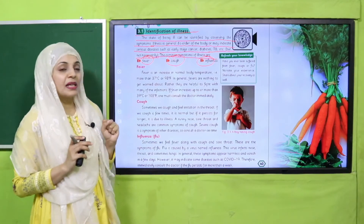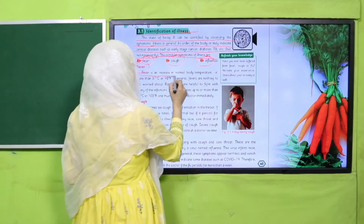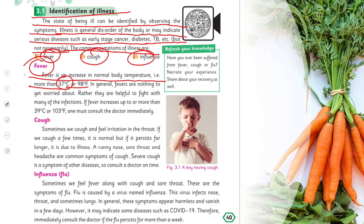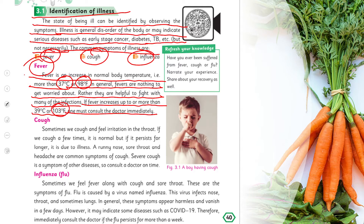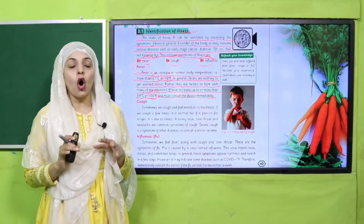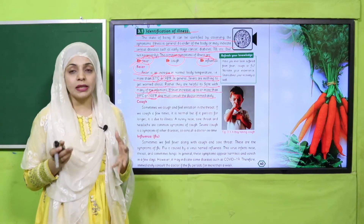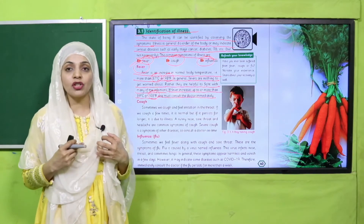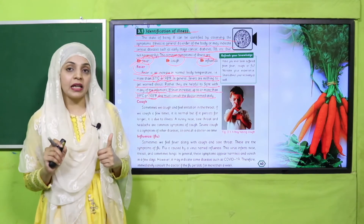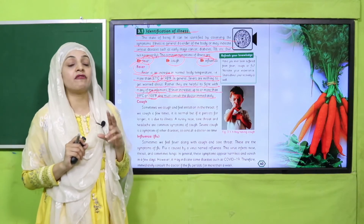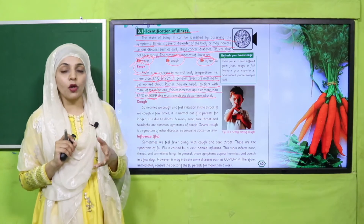We will discuss them in detail. Fever is an increase in normal body temperature — more than 37 degrees Celsius or 98 degrees Fahrenheit. In general, fevers are nothing to worry about; rather, they are helpful in fighting many infections. However, if fever increases to more than 39 degrees Celsius or 103 degrees Fahrenheit, one must consult the doctor immediately. So the normal human body temperature is around 37–38 degrees Celsius, and if it goes higher than 39 degrees, see a doctor right away.